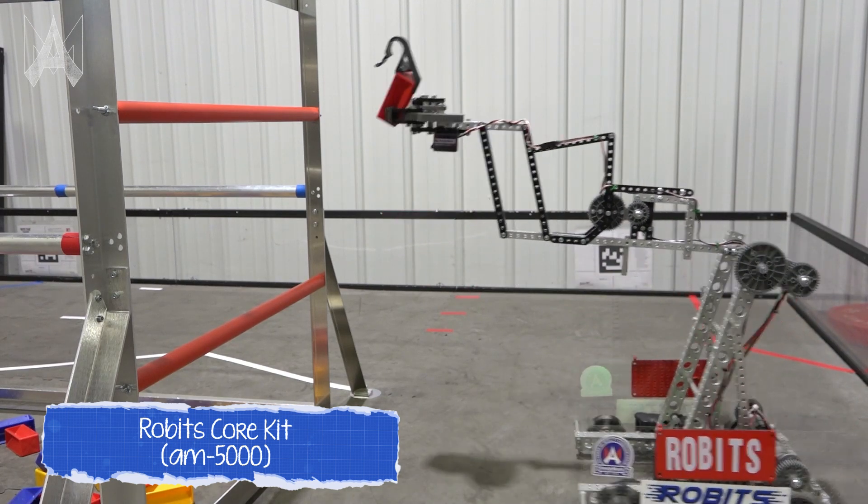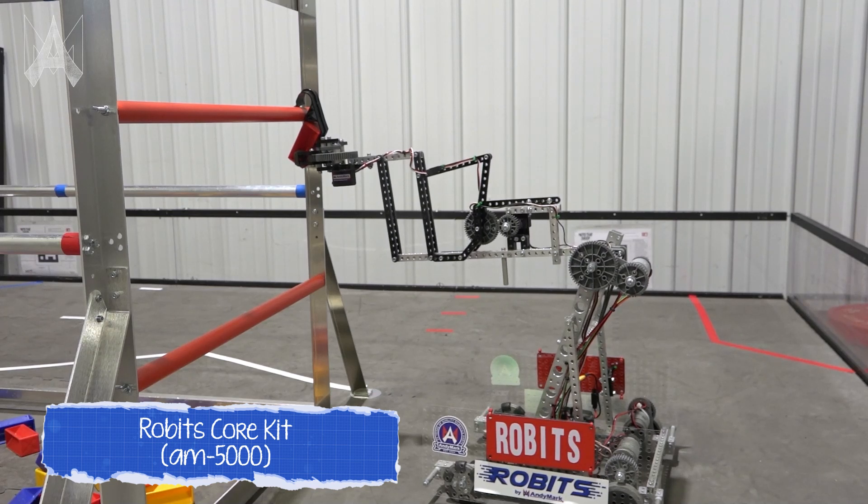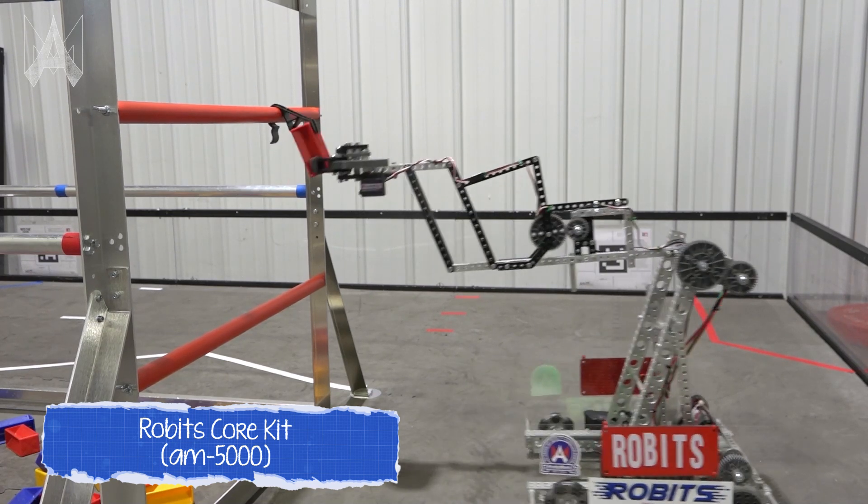Specimens, once collected, can be placed on the submersible on one of the two chambers. These are the red and blue pipes on the submersible. Placing a specimen on the high and low pipes is worth a different amount of points, but they do present a similar challenge.